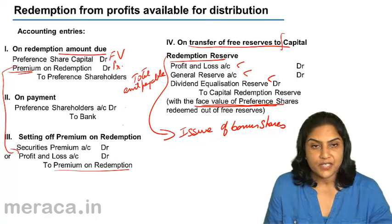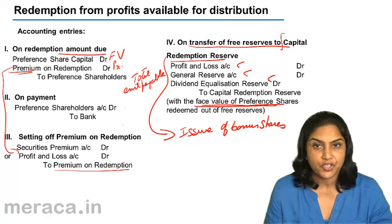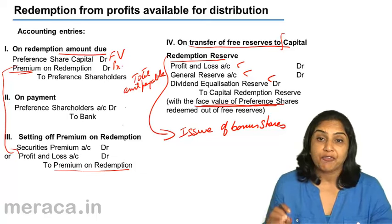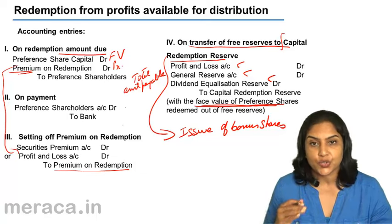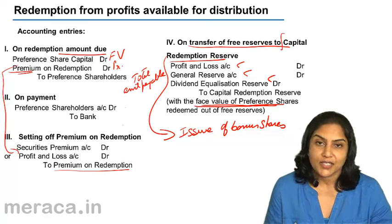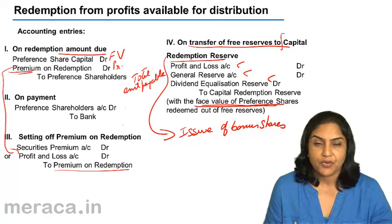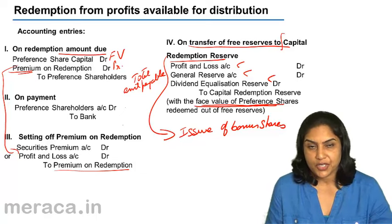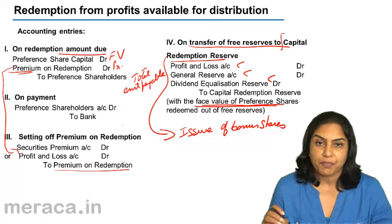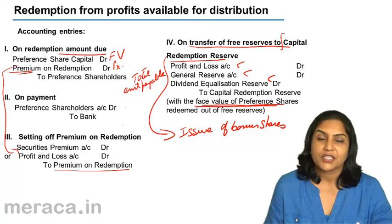So the entries are very simple: for redemption amount due — preference share capital debit, premium on redemption, to preference shareholders. Pay off the preference shareholders — preference shareholders account debit to bank. If there was a premium on redemption, remember to set it off against securities premium if available, otherwise against the profit and loss account: securities premium account debit or profit and loss account debit to premium on redemption of preference shares. And don't forget to transfer the face value of preference shares being redeemed out of free reserves to the capital redemption reserve account.